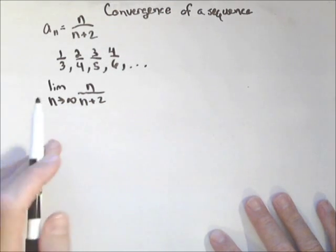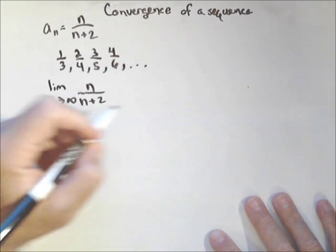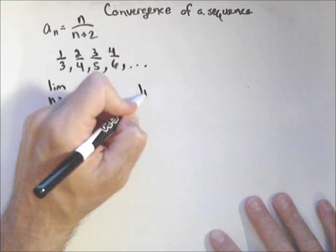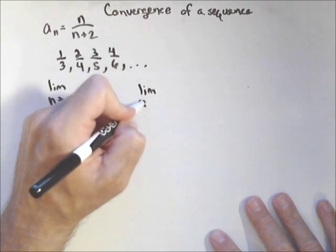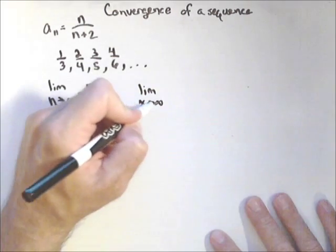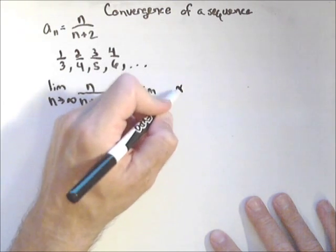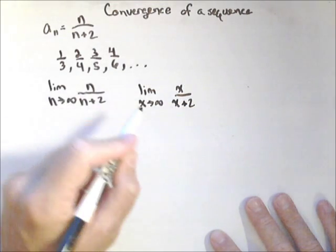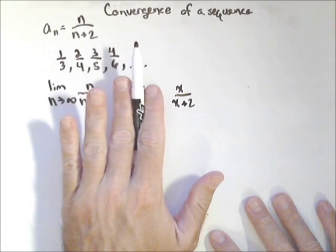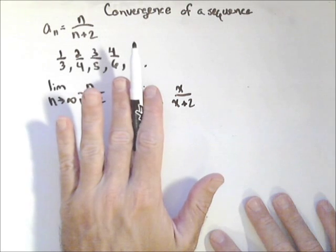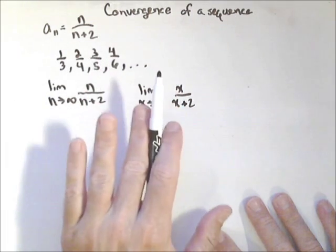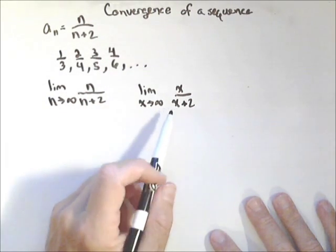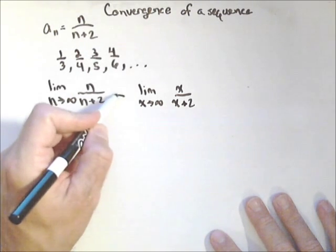Now, we're doing this in terms of n, but imagine if we used x. So limit as x goes to infinity of x over x plus two. Because now, if we just look at that part right there, we have a rational function, a polynomial over a polynomial.